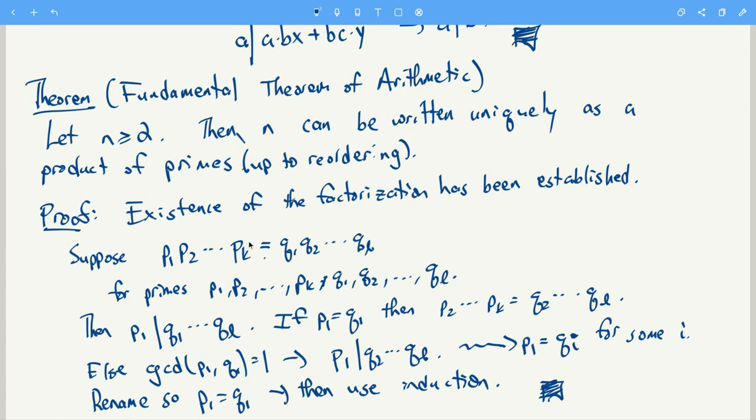And we have to be able to do that, and then eventually we're left with one on the left-hand side. Well, the only way to write one, no prime can divide one, so we have to have one on the right-hand side, and it means that all the primes on the left have been matched up with one of the primes on the right, and so they were really the same factorization.